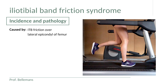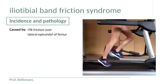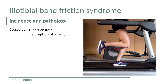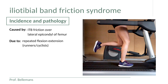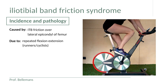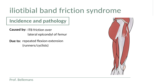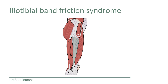Iliotibial friction syndrome is one of the most common sports injuries in the knee, seen especially in athletes who do a lot of repeated flexion-extension motions like long-distance runners and cyclists. The iliotibial band is the prolongation of the iliotibial tract, which runs from the lateral side of the pelvis to the lateral side of the knee. It is relatively wide in its mid portion but becomes more narrow at the level of the knee, where we call it the iliotibial band.